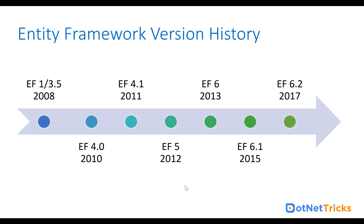Then in 2010, with Visual Studio 2010, they released Entity Framework 4.0 with some upgraded features, addressing the drawbacks of Entity Framework 3.5, because Entity Framework 1 was very buggy. There were many issues in 3.5, but in 4.0 they improved it a lot. Then Entity Framework 4.1 was introduced in 2011, and in 4.1 they introduced the code-first approach, because initially Entity Framework was used with the database-first approach only.